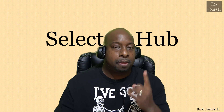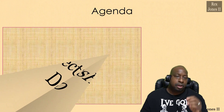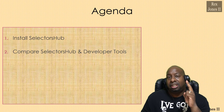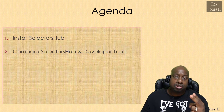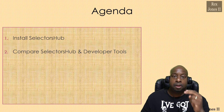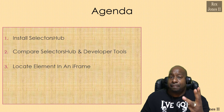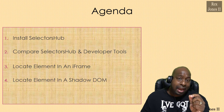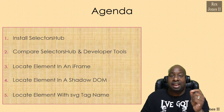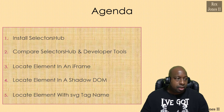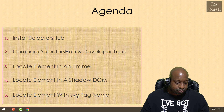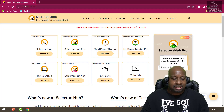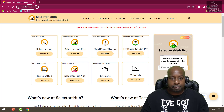The agenda is to install SelectorsHub, compare SelectorsHub with our browser's developer tools feature, locate an element inside of an iframe, locate an element inside of a shadow DOM, and locate an element inside of an SVG tag. The application can be downloaded or installed at selectorshub.com.